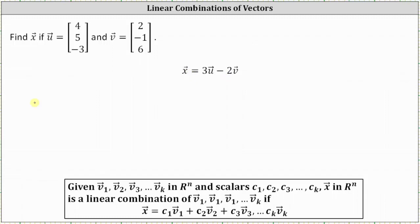We'll first find vector x, and then we'll also take a look at this graphically. Vector x is equal to three times vector u minus two times vector v. Now, if we wanted to, we could write minus two times vector v as plus negative two times vector v.